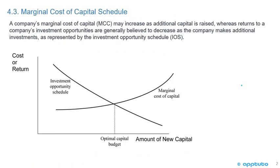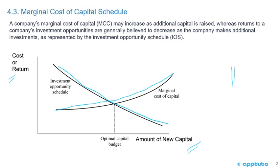A company's marginal cost of capital may increase as additional capital is raised, whereas returns on a company's investment opportunities are generally believed to decrease as additional investments are made, as represented by the investment opportunity schedule. On the chart, the y-axis shows cost or return, the x-axis shows the amount of new capital. The investment opportunity schedule slopes downward, while the marginal cost of capital rises, and the optimal capital budget is where they intersect.